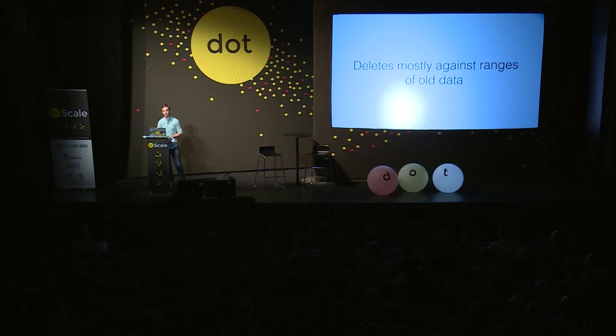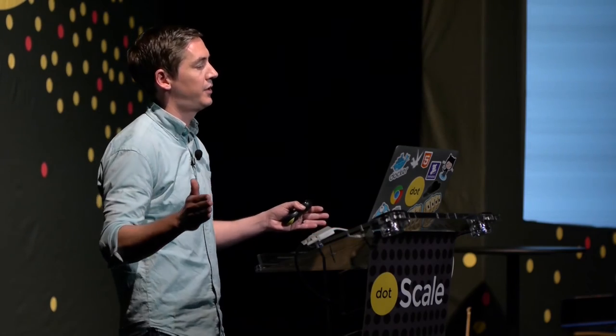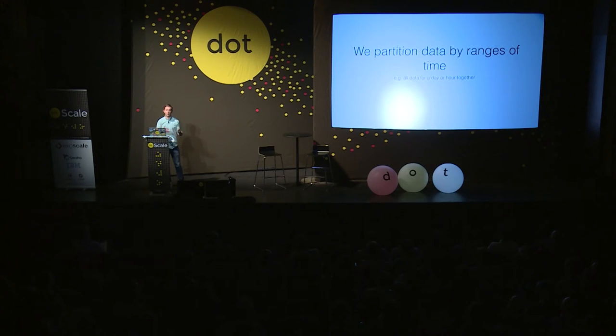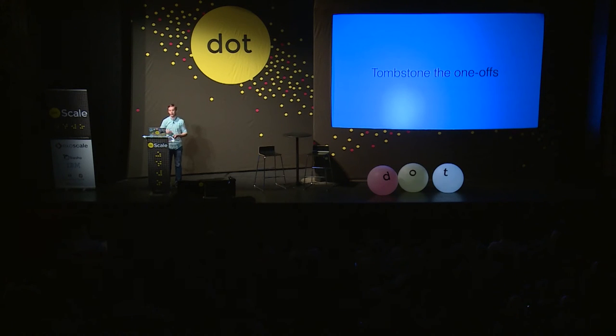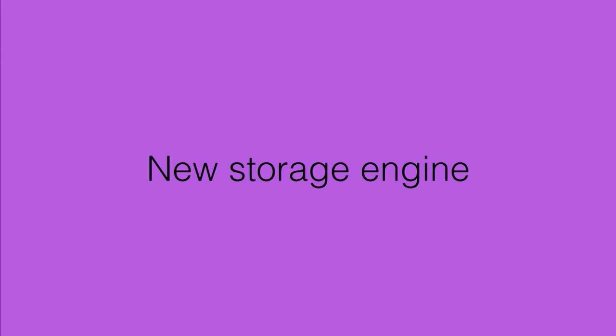Deletes that happen aren't usually against single records — they're against large ranges of old data. You say drop three-month-old data from every series because you've already downsampled it and captured the summaries. So within InfluxDB, we partition data by ranges of time — all data for a day goes here, all data for an hour goes here. When we want to delete old data, we just drop the files. Dropping files is really cheap compared to updating indexes. For deletes against specific records, we tombstone the one-offs and resolve later. All of this points to creating a new storage engine optimized for our use case.